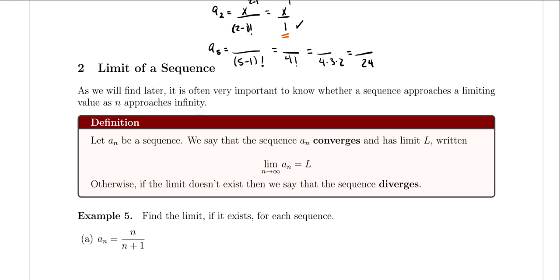As we'll find out later, it is often very important to know whether a sequence will be approaching a limited value as n approaches infinity. So, let a_n be a sequence. We say that this sequence will converge and has a limit L, written as the limit as n approaches infinity of a_n equals L. Otherwise, if the limit does not exist, we say that the sequence diverges.